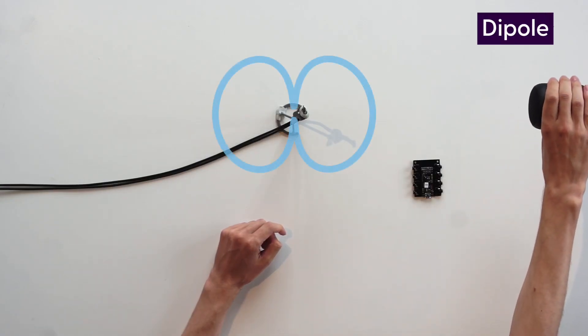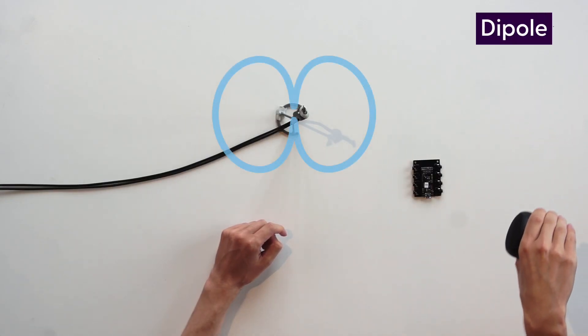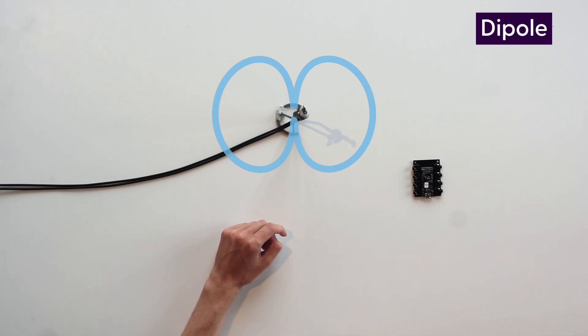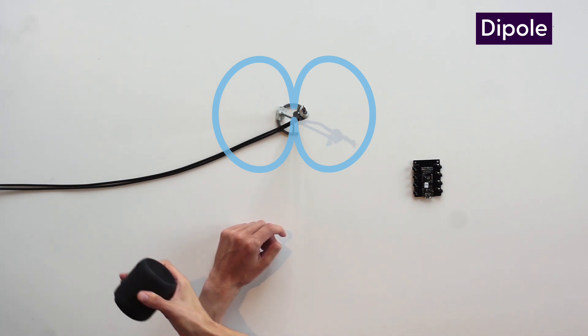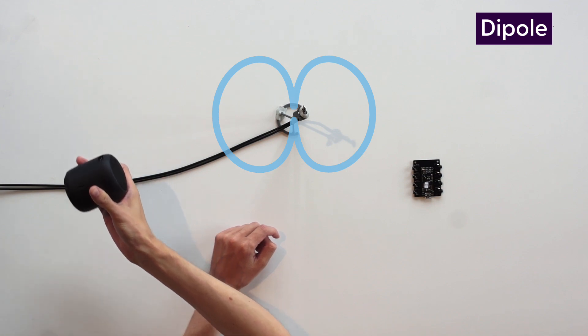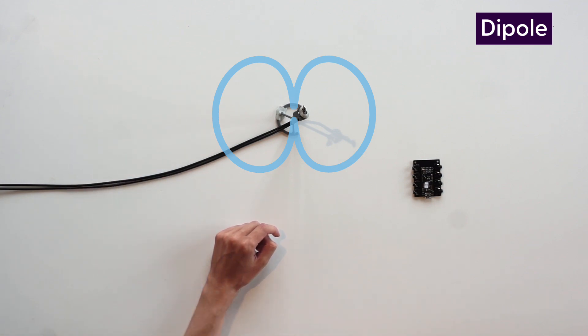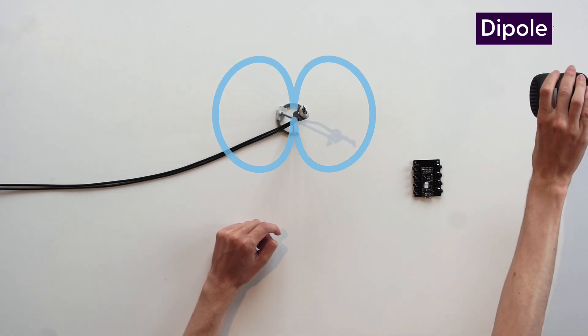Next we will record a dipole which is sensitive in the front and back, but rejects sound coming from 90 degrees. Notice how when the speaker is pointed at the null at 90 degrees the sound is greatly reduced.